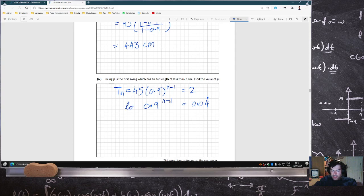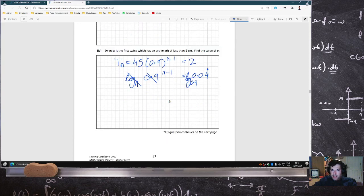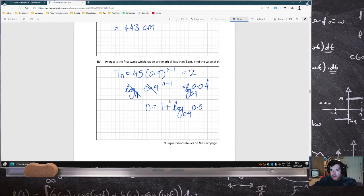You could log base 0.9 both sides, cancel. So the N would just be 1 plus log base 0.9 of 0.04 like that. So it's the 31st swing.